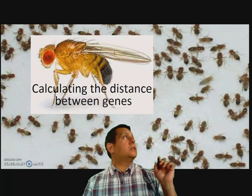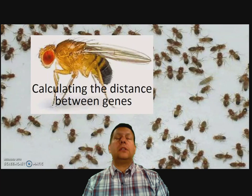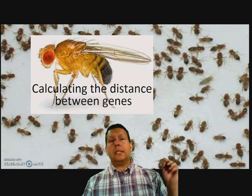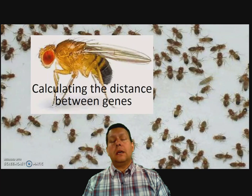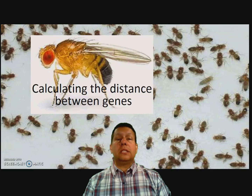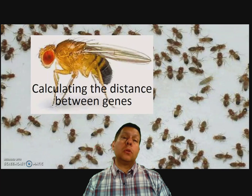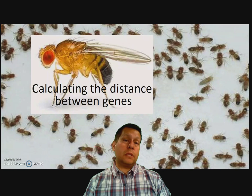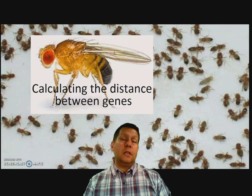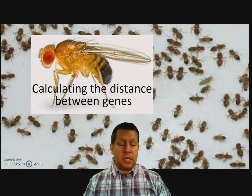Here you can see we've got some fruit flies all around, and one magnified, and you can see some traits. You can see the red eyes, you can see the yellow body, you can see the normal wing structure. What we're going to do is look at some of these traits and cross it with a recessive to see frequencies of how often they show up in the offspring.